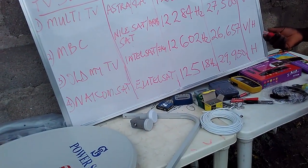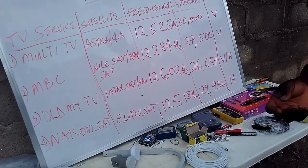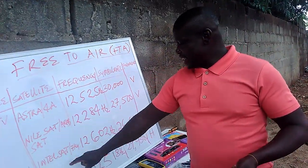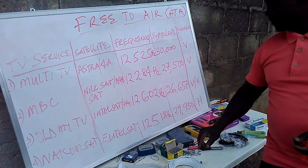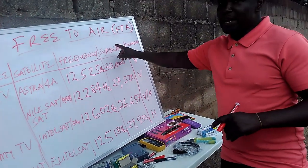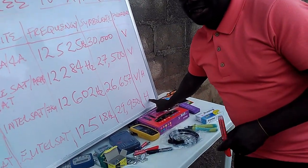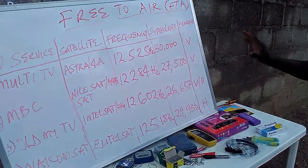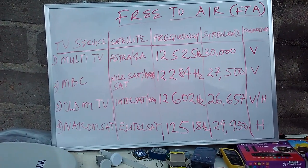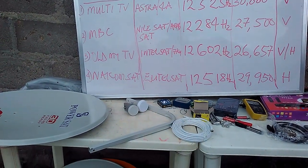Then we have the NikomSat. This is where you get the Nigerian channels like Televista, TVC Entertainment, NTA International, MBC, and the rest. The satellite is UTELSAT. The frequency is 12,518. The symbol rate is 29,950. The polarization is horizontal. You can go through them because we are going to make use of all this information in our practical work.